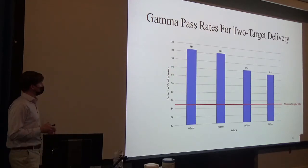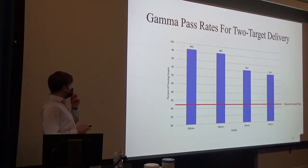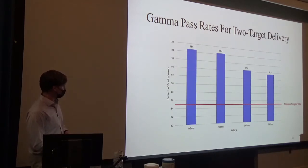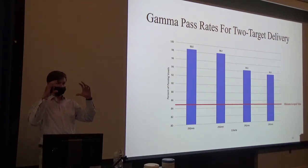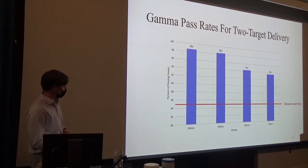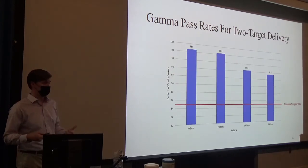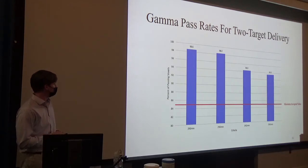The results of this two-target delivery were extremely good. On the x-axis we have decreasing criteria — that ellipsoid getting smaller and smaller. Even down to our most strict criteria of 2% and 2mm, we're well above the minimally accepted value for clinical and hospital applications at the current time, which is really promising.